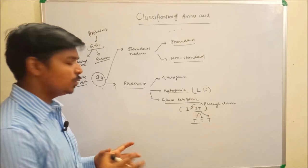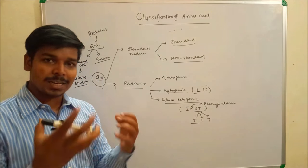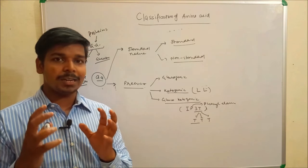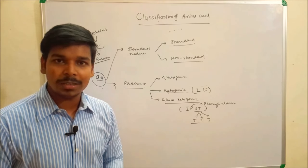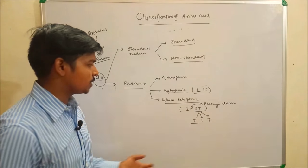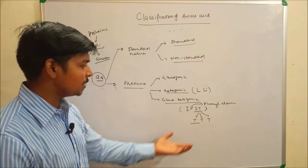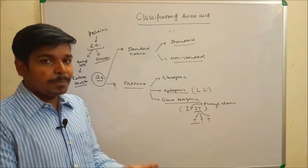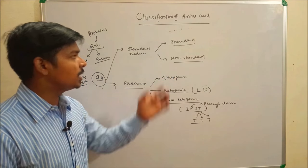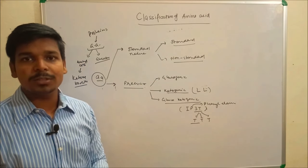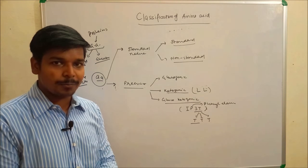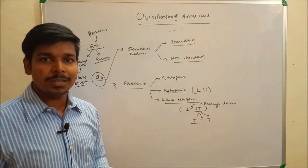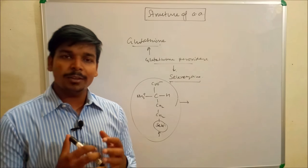This overall classification of amino acids on the basis of various parameters is difficult to find compiled in any single book. Remember all the amino acids across the various classifications — such as glucoketogenic, glucogenic, polar, or standard — since exam questions can come from any of these categories.